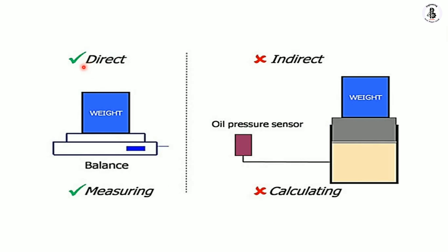On the left side you can see an example of direct measurement. Here we are measuring the weight of a particular product using a weighing machine. You directly place the product onto the surface and with this instrument the weight is directly indicated on the display. This quantity is directly measured, so it is known as a direct measurement.